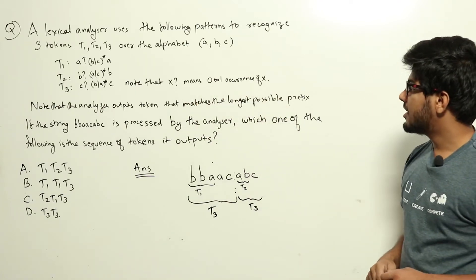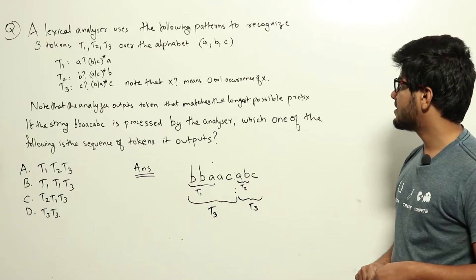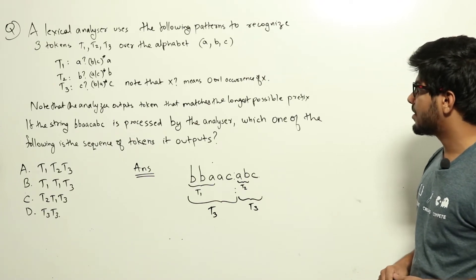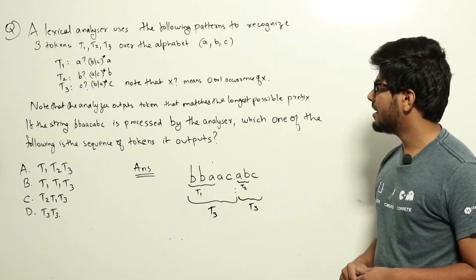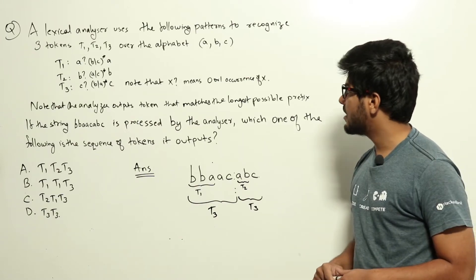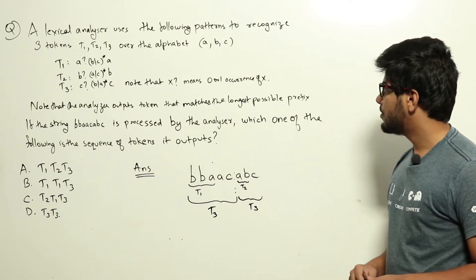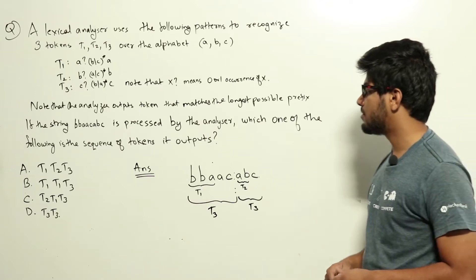Note that the analyzer outputs the token that matches the longest possible prefix. If the string bbaacabc is processed by the analyzer, which one of the following is the sequence of tokens it outputs?